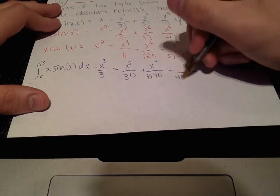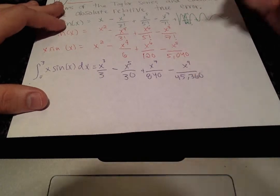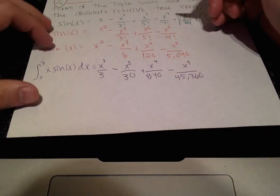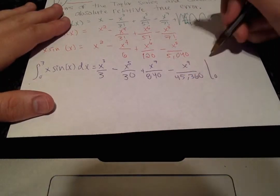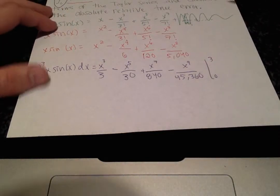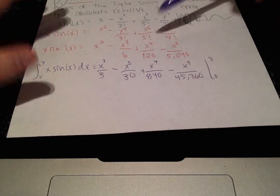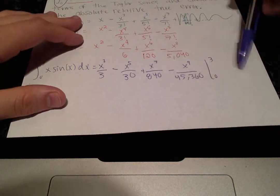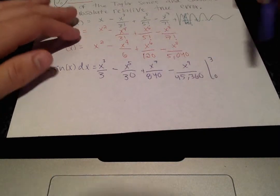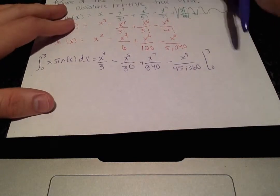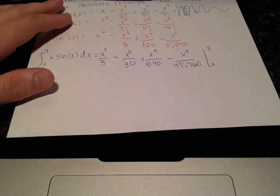45,000. Okay, and we want to evaluate this from 0 to 3. So to do that, you just plug in 3 for all of the x terms and then subtract that whole quantity by 0 plugged into all of these terms, which will just be 0. So when we plug in 3,